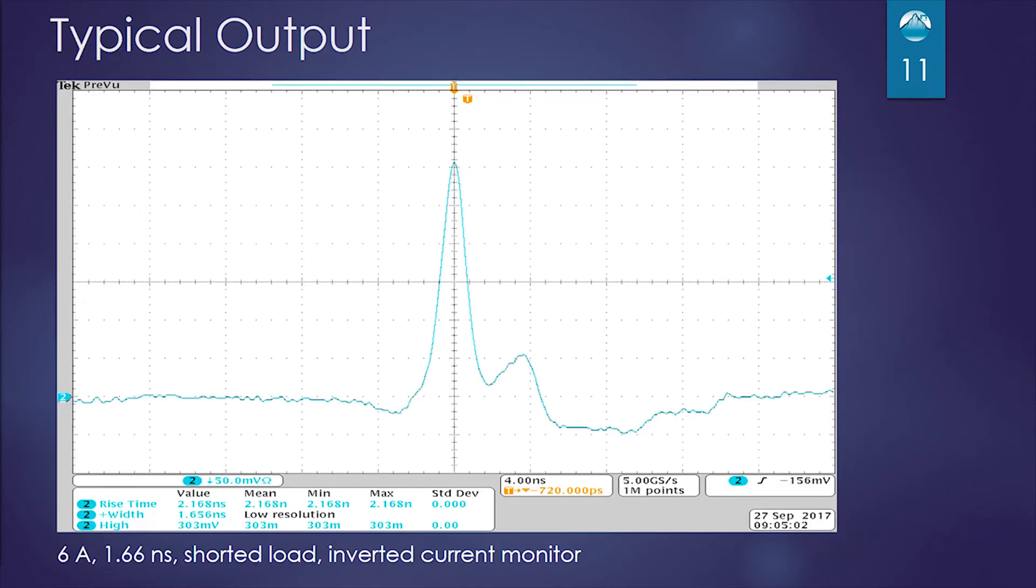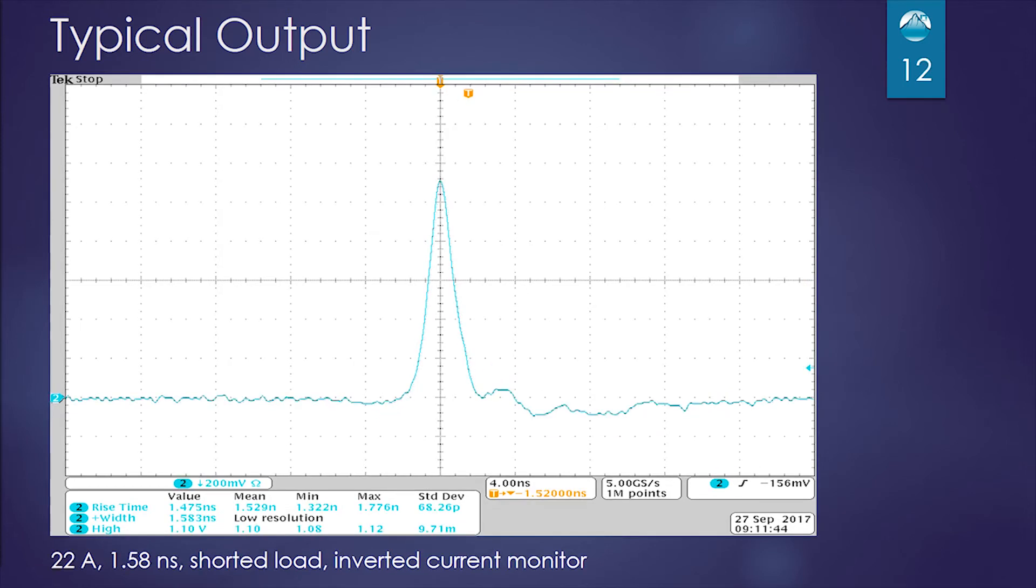I have two graphs that are actually oscilloscope shots, one at the lowest current setting, which is 6 amps, and it shows a 1.66 nanosecond pulse width. This is driving a shorted load, and we inverted the current monitor just so it's easier for you to see what the actual output current is. Here's the same output current at 22 amps. We have a slightly smaller pulse width.